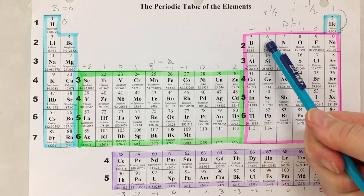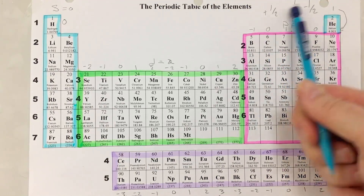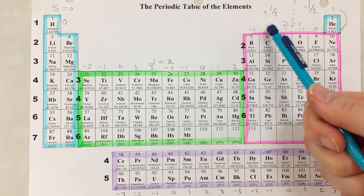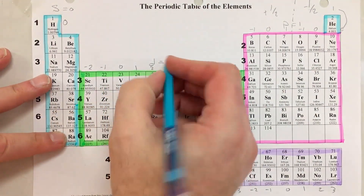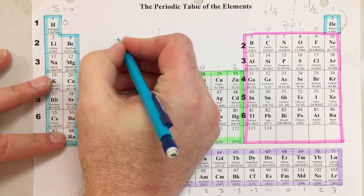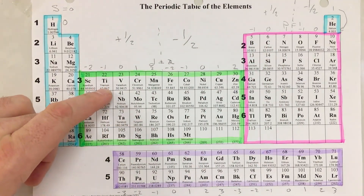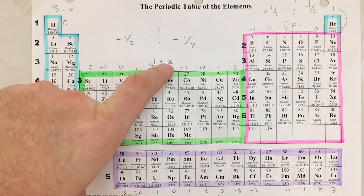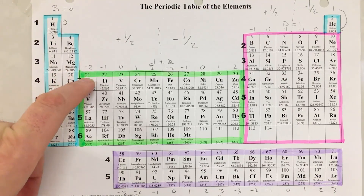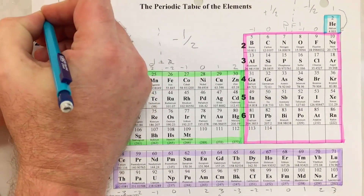For carbon: the first quantum number is 2, the second quantum number is 1 (p equals 1), the third quantum number is 0, and since it's on the plus one half side, the fourth quantum number is plus one half. For the d block, if we count over five columns and draw a dotted line, the left side is plus one half and the right side is minus one half. For scandium: first quantum number is 3, second is 2 (d orbital), third is minus two, fourth is plus one half.